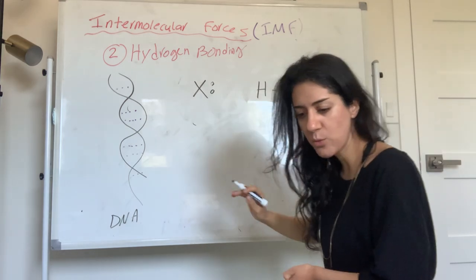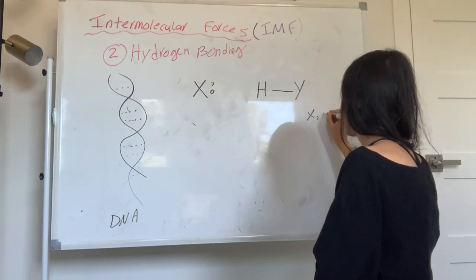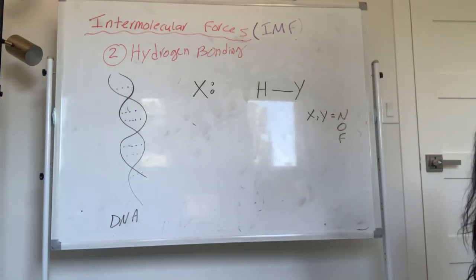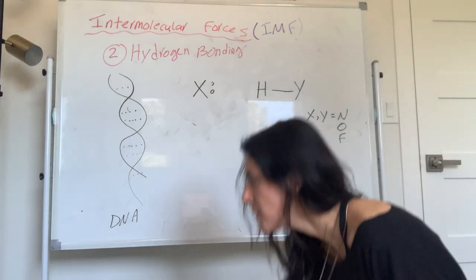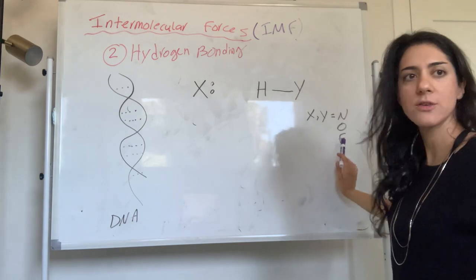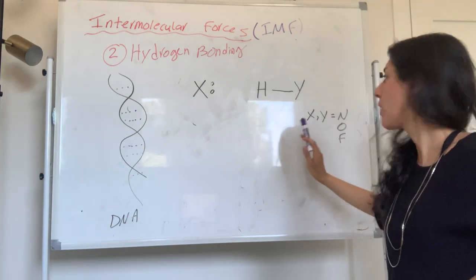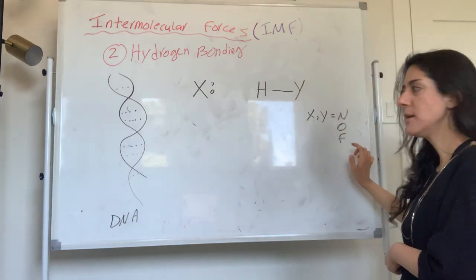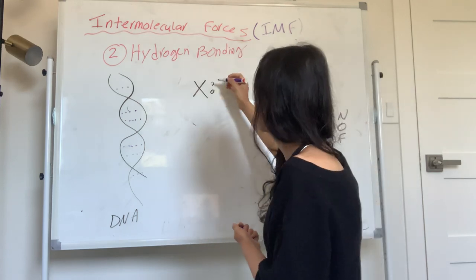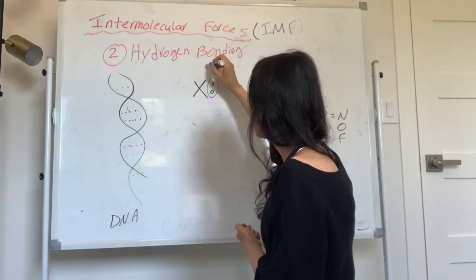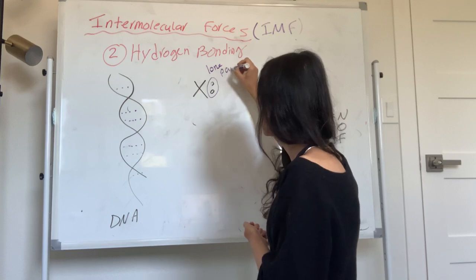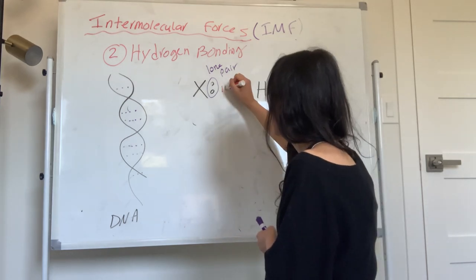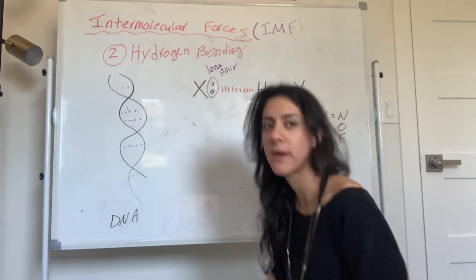Let's go over exactly what hydrogen bonding is. Write this down: X–H···Y, where X and Y could be nitrogen, oxygen, or fluorine. Hydrogen bonding is going to happen between the lone pair of Y and the hydrogen attached to X. Nitrogen, oxygen, and fluorine — are those electronegative atoms? Yes, they are electronegative.